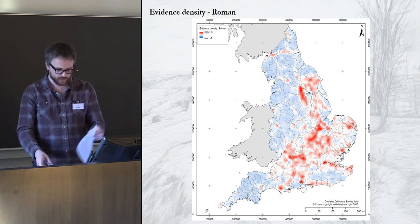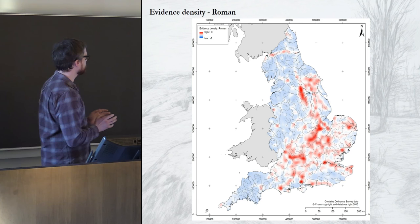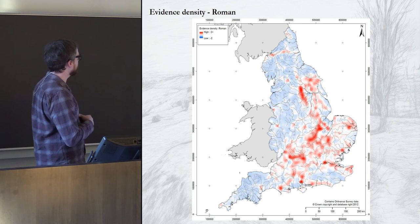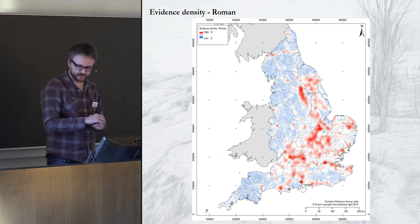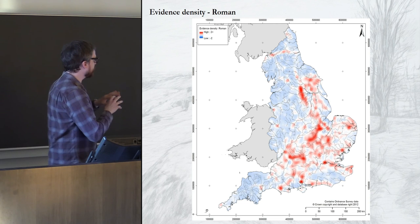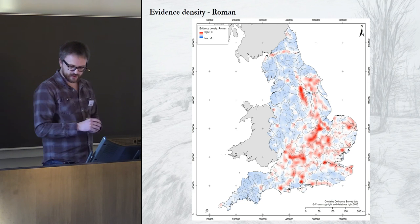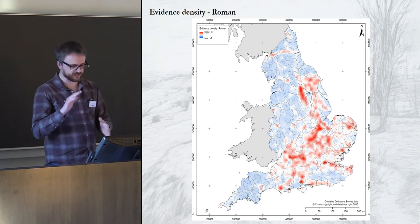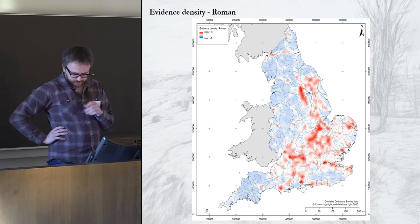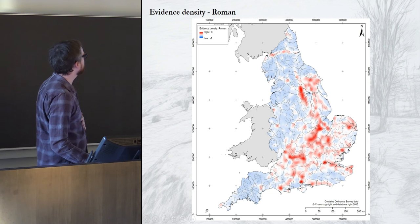Moving on to the Roman period, this east-west distinction becomes even clearer — there's even less going on in the west, which is quite interesting on a relative basis. The actual core values from the surface would be much higher for the Roman period than the Iron Age period. In the west, the only things you really see are the big towns, the legionary fortresses, or military things — and obviously up here is Hadrian's Wall.